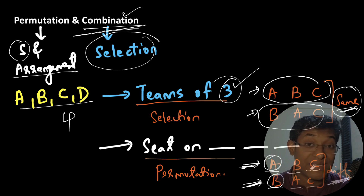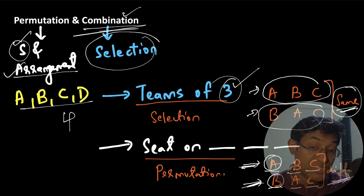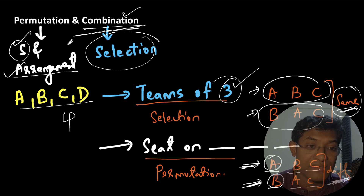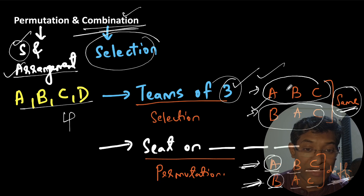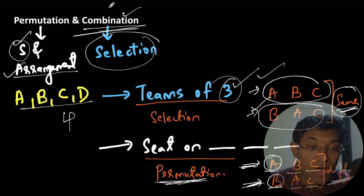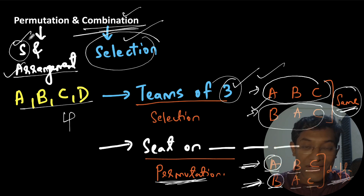So permutation is nothing but selection and arrangement. We initially select three people out of four and then arrange them in three positions. In the case of combination, order was not important — A, B, C and B, A, C were one and the same. But in the case of permutation, order is important. So now we have thoroughly understood the difference: combination is just selection, and permutation is selection and arrangement.